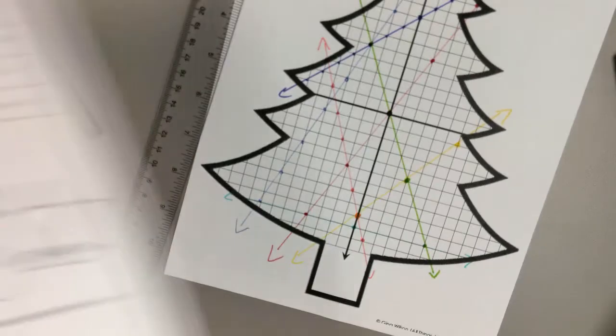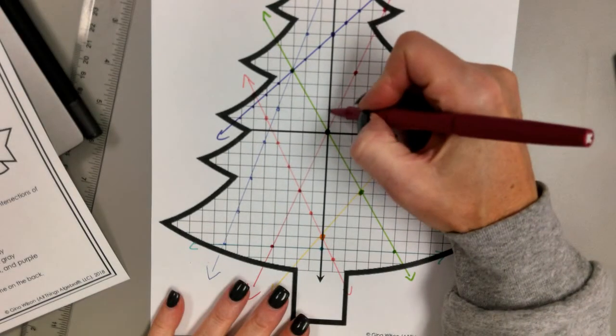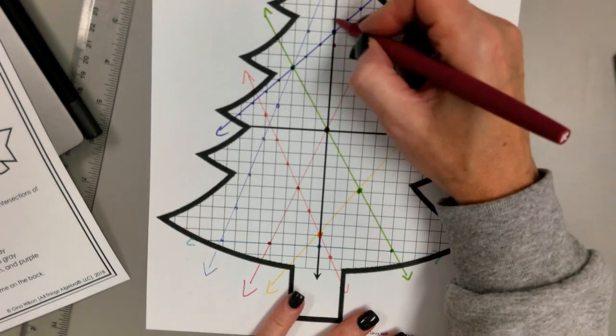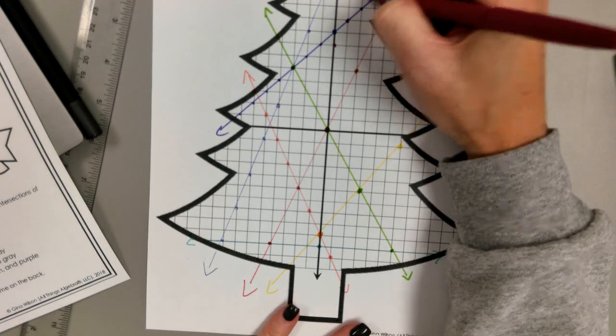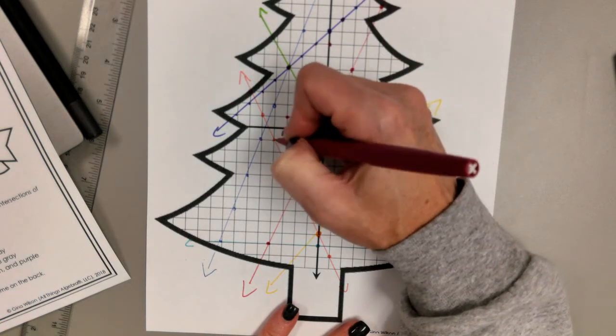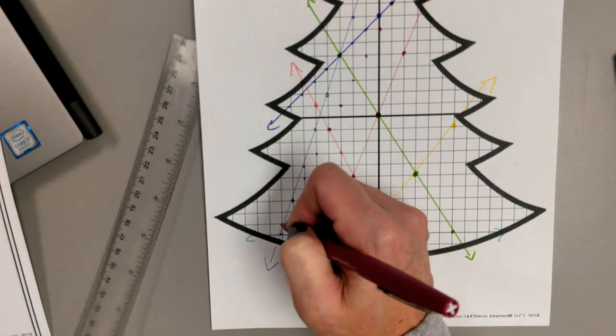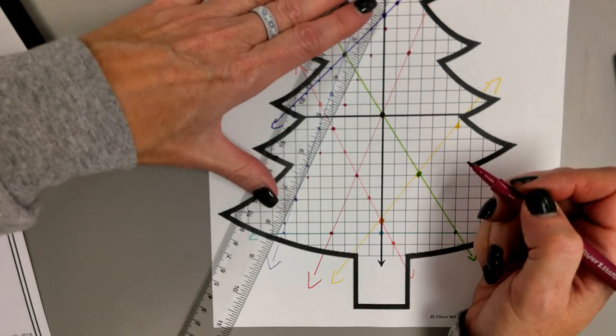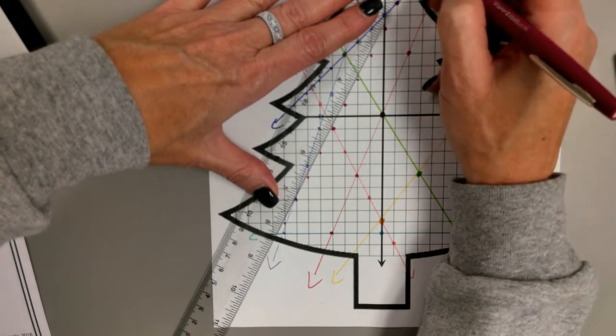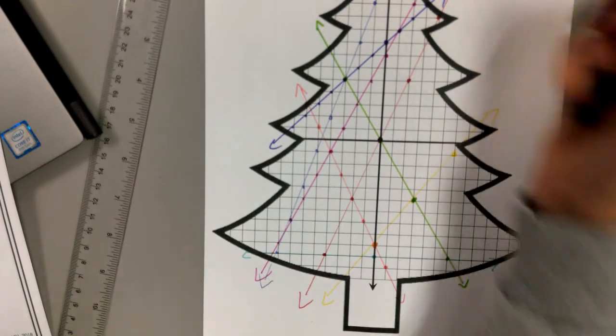All right. Then we had pink. And it says y equals 2x plus 7. So 7 is where I start. And our slope, it said 2x, so 2 is our slope. So up 2 over 1, up 2 over 1. And then I'm going to back it up, so down and to the left. And I guess I could mark a few more. Okay, there's my pink.